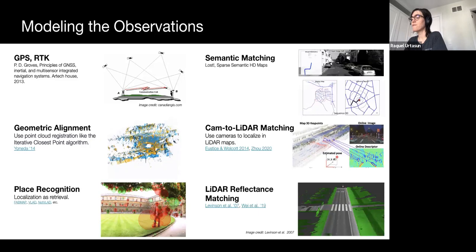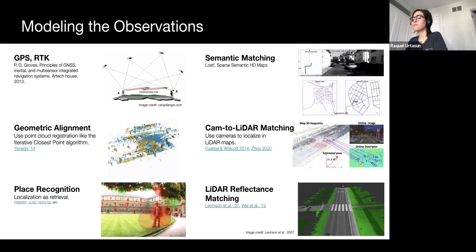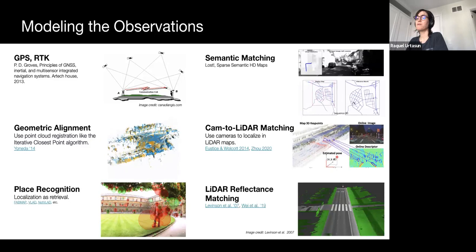Semantic matching tries to match cues extracted from sensor observations to maps which encode the prior locations of such cues. Geometric alignment enforces the vehicle pose by rigidly aligning the perceived geometry to a known 3D map.